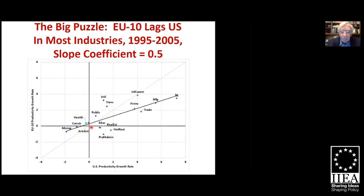Once again, the pale blue 45-degree line is shown. If we plot European versus American productivity growth in that revival decade of the late 1990s and early 2000s, we see that across the board on average — this is a regression line — Europe had about half the productivity growth of the United States. Information and communications technology, transportation, and public affairs were industries where Europe did relatively well in terms of the use of technology, but manufacturing, agriculture, and trade were doing relatively poorly, along with several other industries below the line.